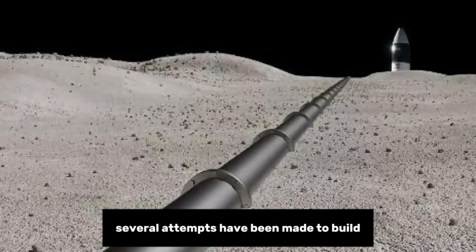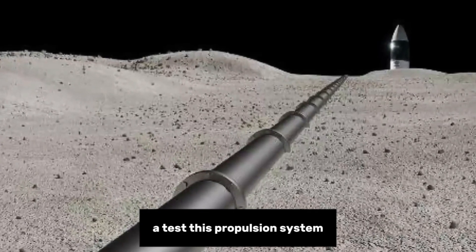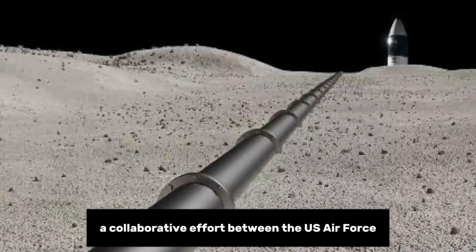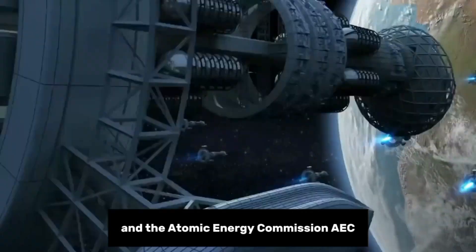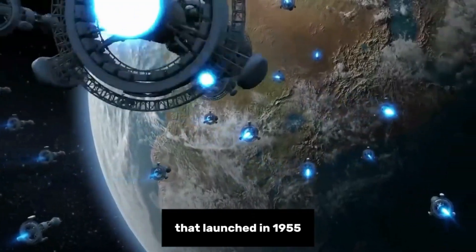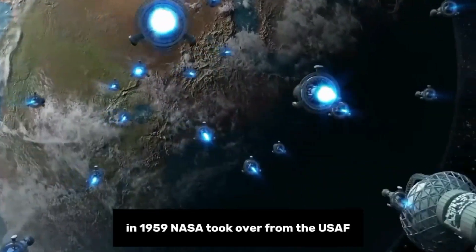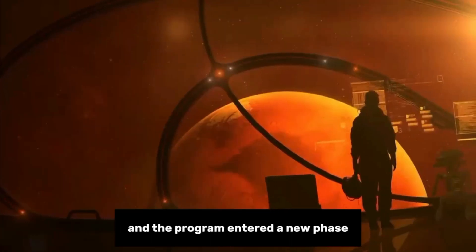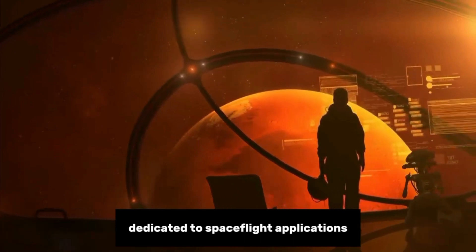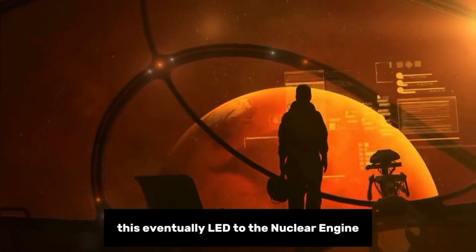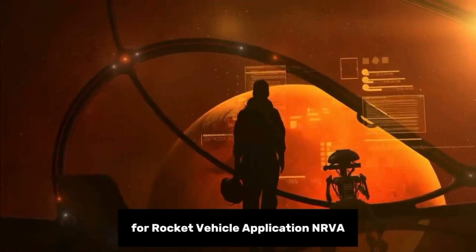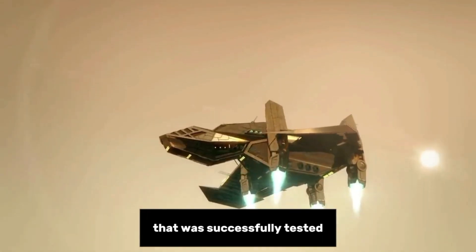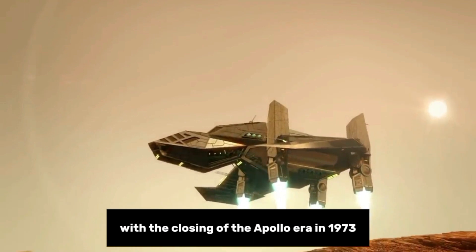Several attempts have been made to build and test this propulsion system, including Project Rover, a collaborative effort between the U.S. Air Force and the Atomic Energy Commission (AEC) that launched in 1955. In 1959, NASA took over from the USAF and the program entered a new phase dedicated to spaceflight applications. This eventually led to the Nuclear Engine for Rocket Vehicle Application (NERVA), a solid-core nuclear reactor that was successfully tested.